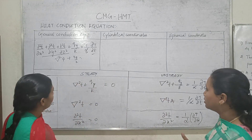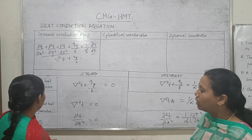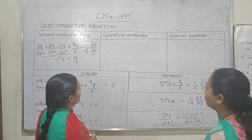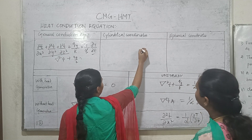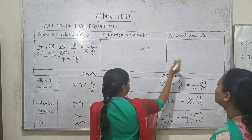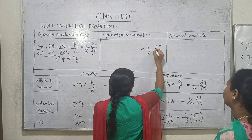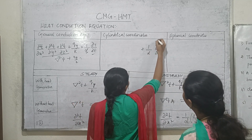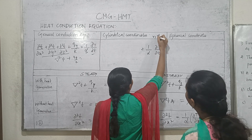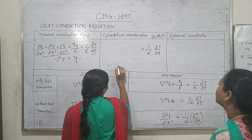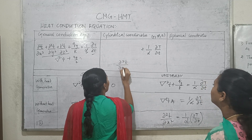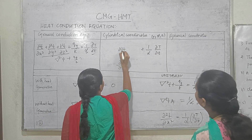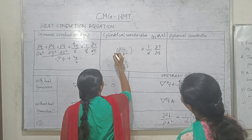The heat conduction equation covers steady and unsteady conditions, with and without heat generation. Next is the cylindrical coordinate and spherical coordinate equation. For cylindrical coordinates, we write the terms in r, φ, and z directions. The z term is ∂²T/∂z², and the φ term is (1/r²)·∂²T/∂φ².